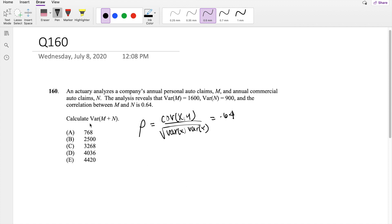And then they ask you to find the variance of m plus n. So the variance of two numbers is equal to the variance of the first one plus the variance of the second one plus two times the covariance of m and n.